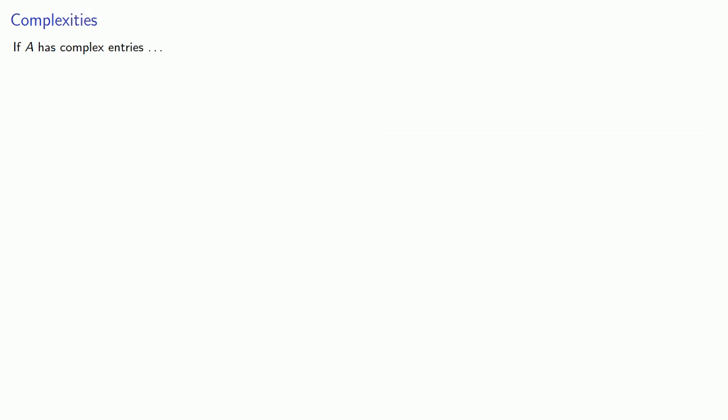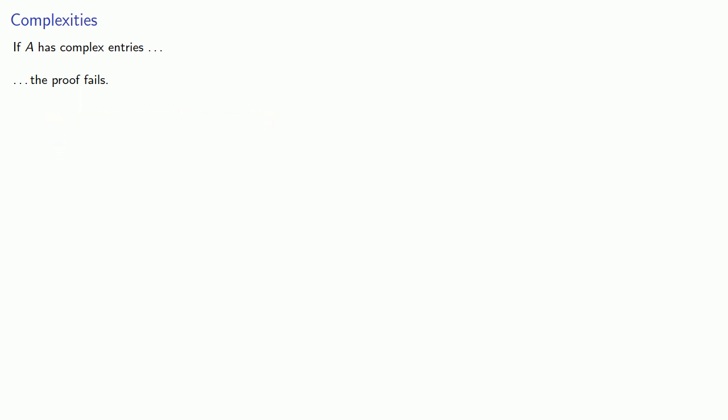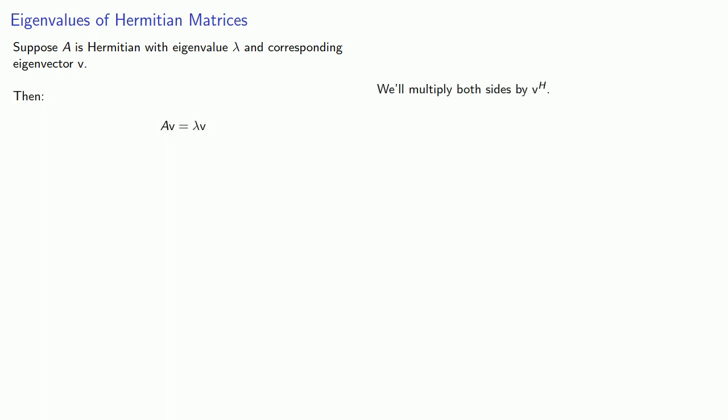Now if A has complex entries, the proof fails. However, if A is Hermitian, a remarkable thing happens. Suppose A is Hermitian with eigenvalue lambda and corresponding eigenvector V. We can write the eigen equation, and let's multiply both sides by the Hermitian of V.